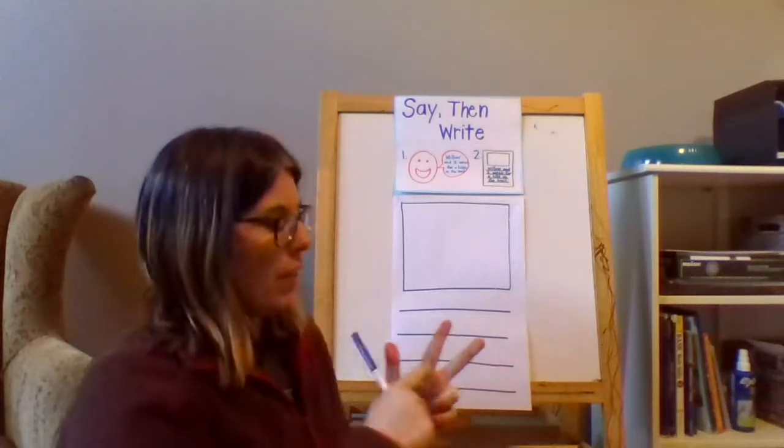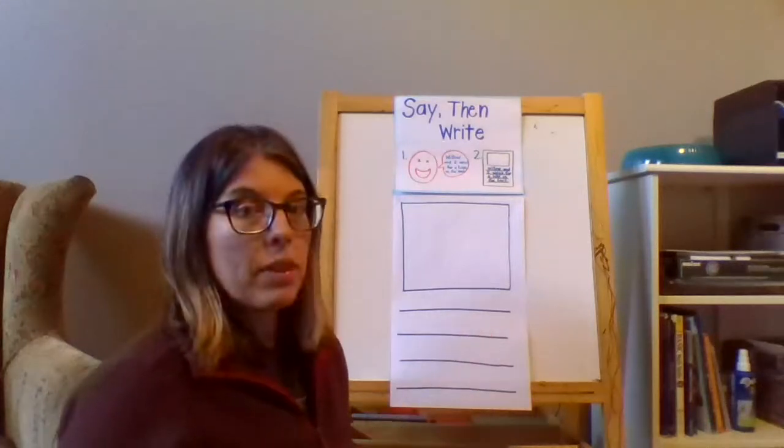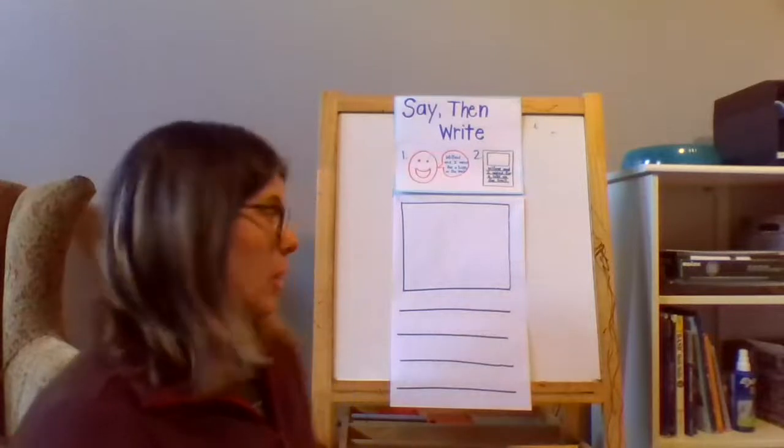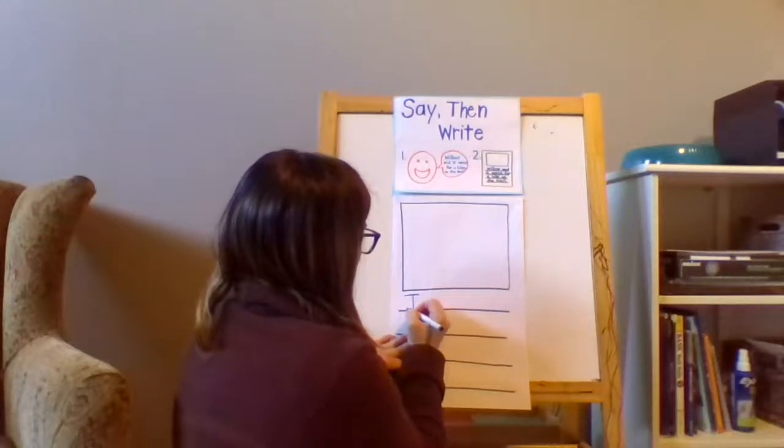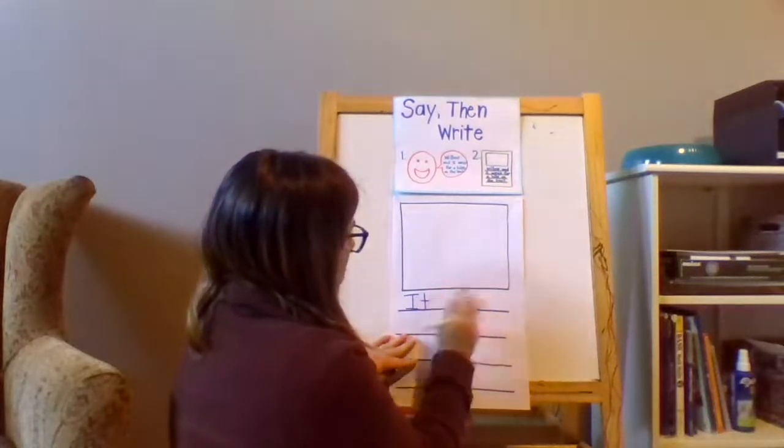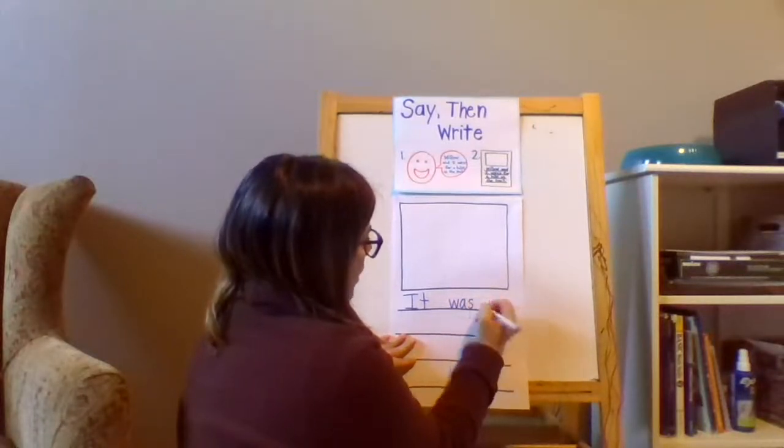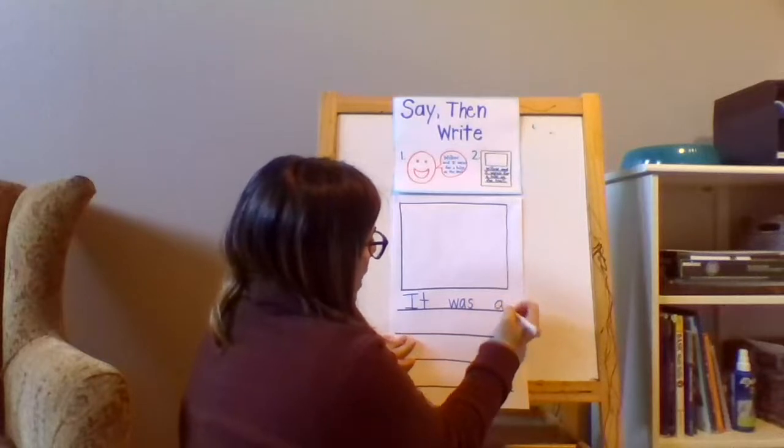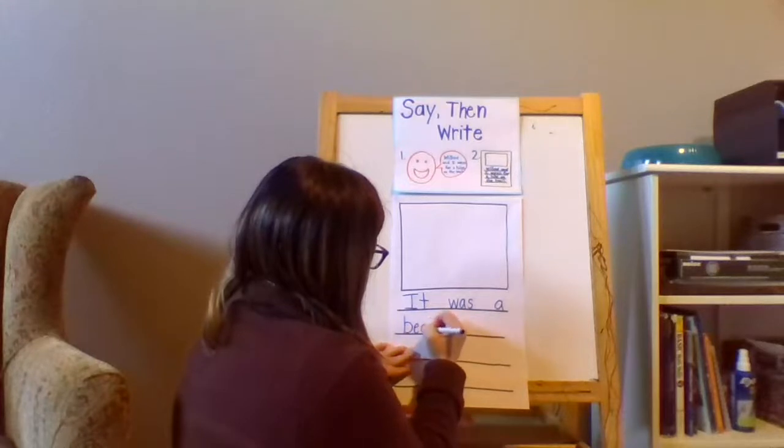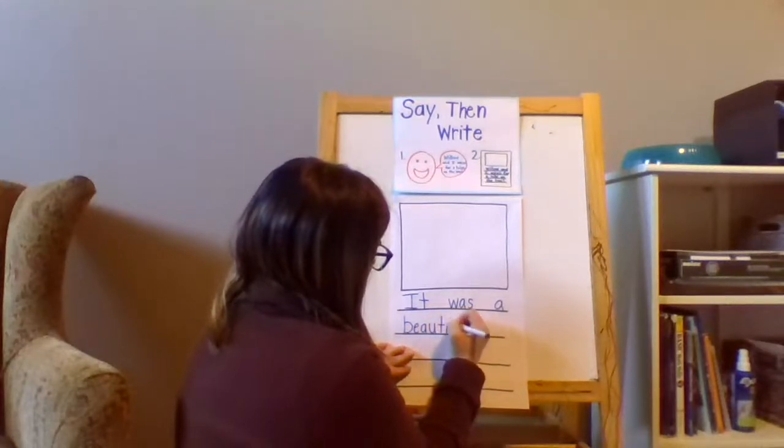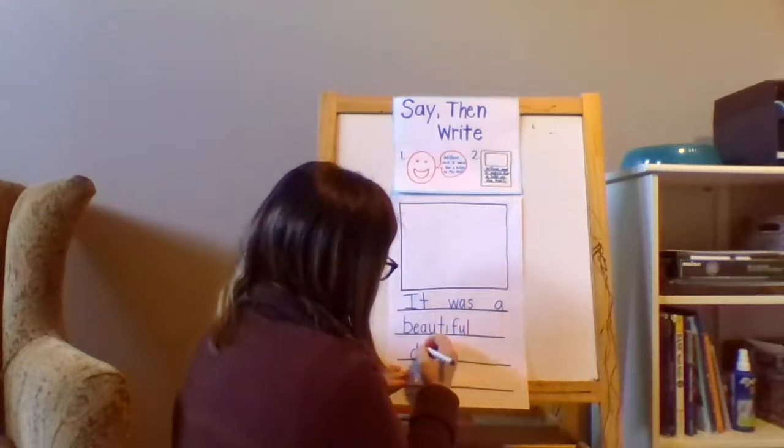So that would be three different things that I could think of to say for the beginning. So I'm going to start with the very first page and that will be, it was a beautiful day. And I'm going to use an exclamation point because that's exciting to me. It, meatball space, was, meatball space, a beautiful day.